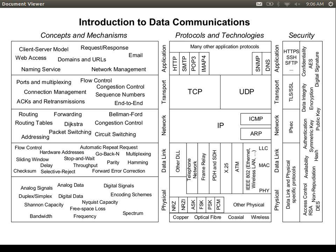Now that we know some concepts of how to get data across the link, we want to look at how do we get data from one source node on the network to another destination node across multiple links. We're going to talk about some technologies today which are related to how do we get data across the network, and in the next few topics, so we're moving towards the network layer. Some of the technologies we talk about today cut across these layers — it's not a simple division, they have tasks across these layers.